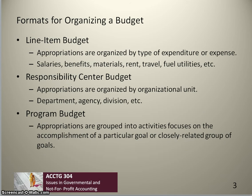There are different formats for organizing a budget — that is, different ways in which the appropriations can be organized in the budget document itself. The first method is a line-item budget. Under a line-item budget, appropriations are organized by the type of expenditure or expense — for example, salaries, benefits, materials, rent, travel, fuel, etc.